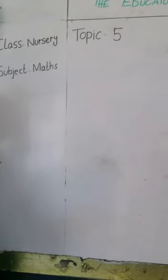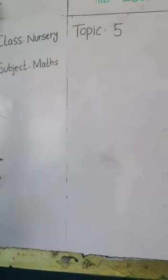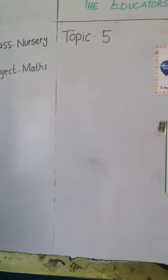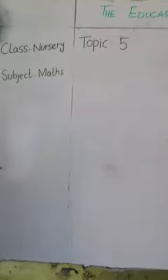1, 2, buckle my shoe. 3, 4, shut the door. 5, 6, pick up sticks. 7, 8, lay them straight. 9, 10, a big fat hen. Okay. Clapping.